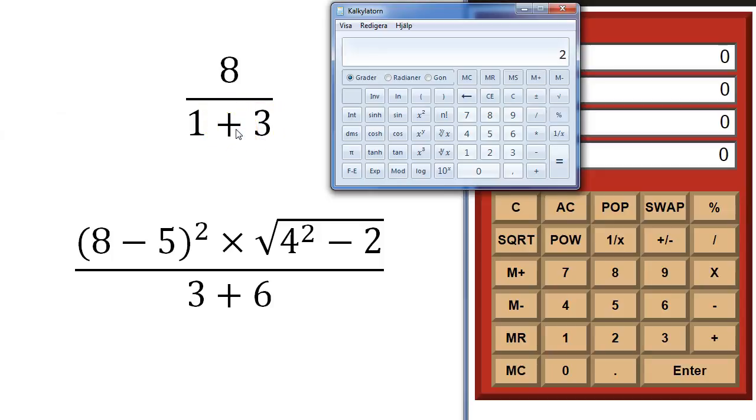While on an RPN calculator you start by supplying the calculator with the operands and then at the end you give them the operator, what you want to do with the numbers.